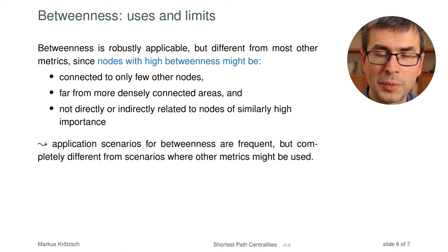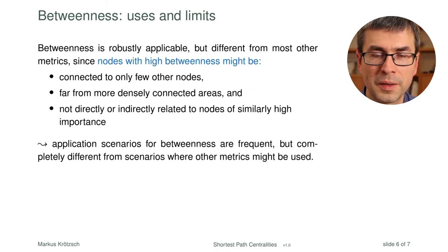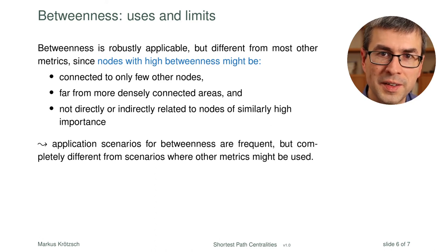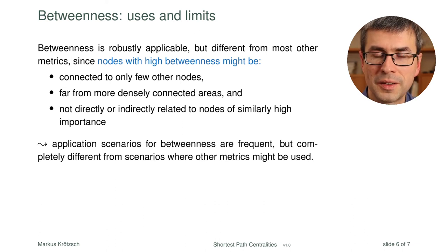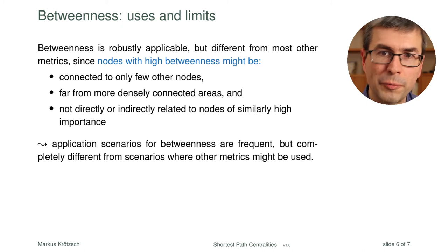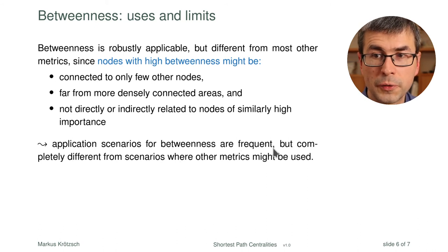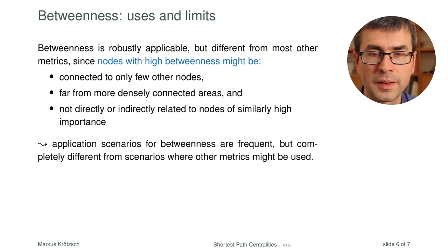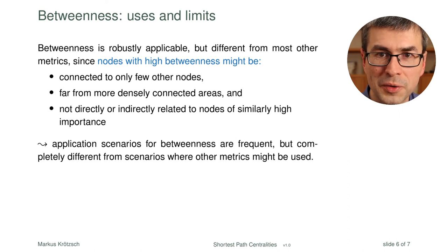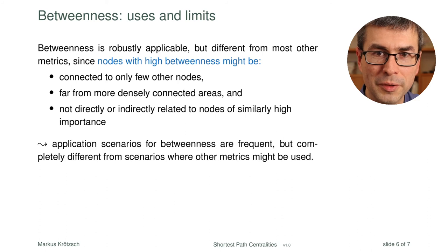Consider a star-shaped graph: all the outer points of the star have betweenness centrality zero because they are all dead ends, but the point in the middle has a very high score. This is very different from the behavior of PageRank. There are frequent application scenarios for betweenness, but they are completely different from the cases where we would use other metrics — you would not use betweenness to find a good page to show as a top result in web search.